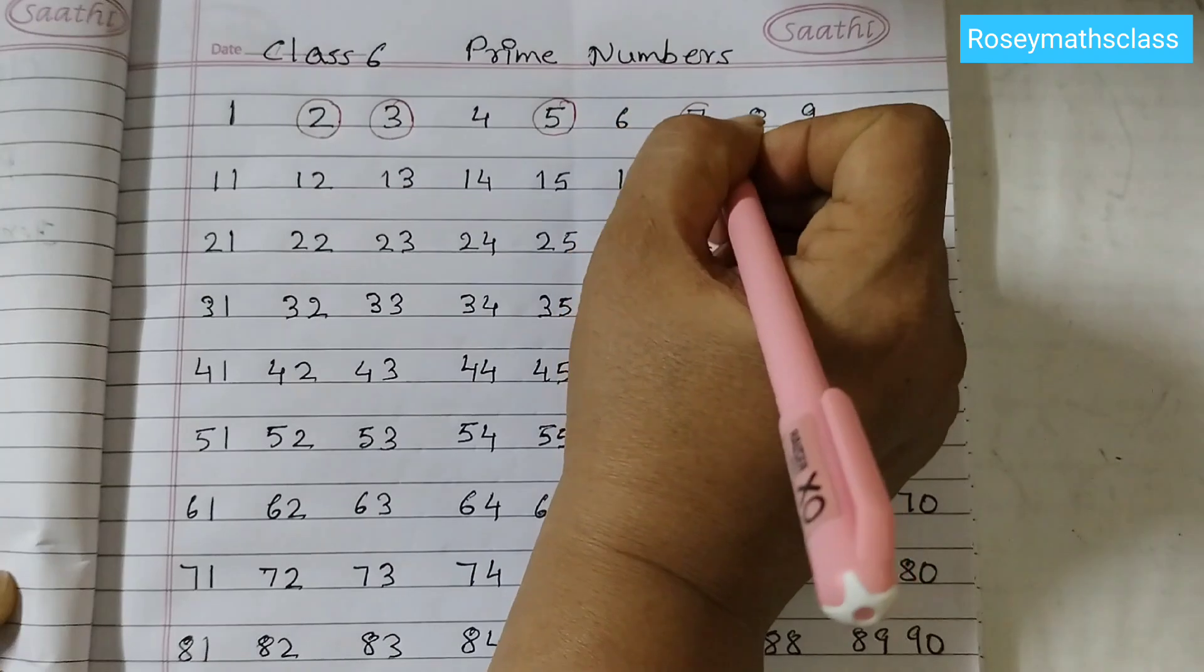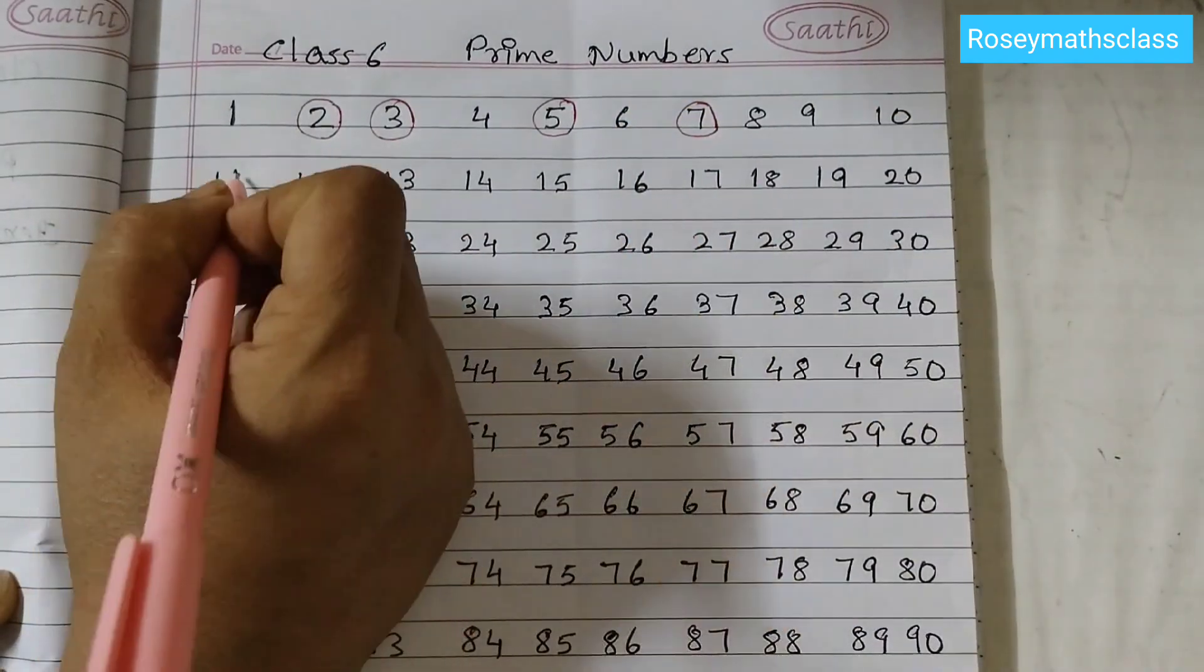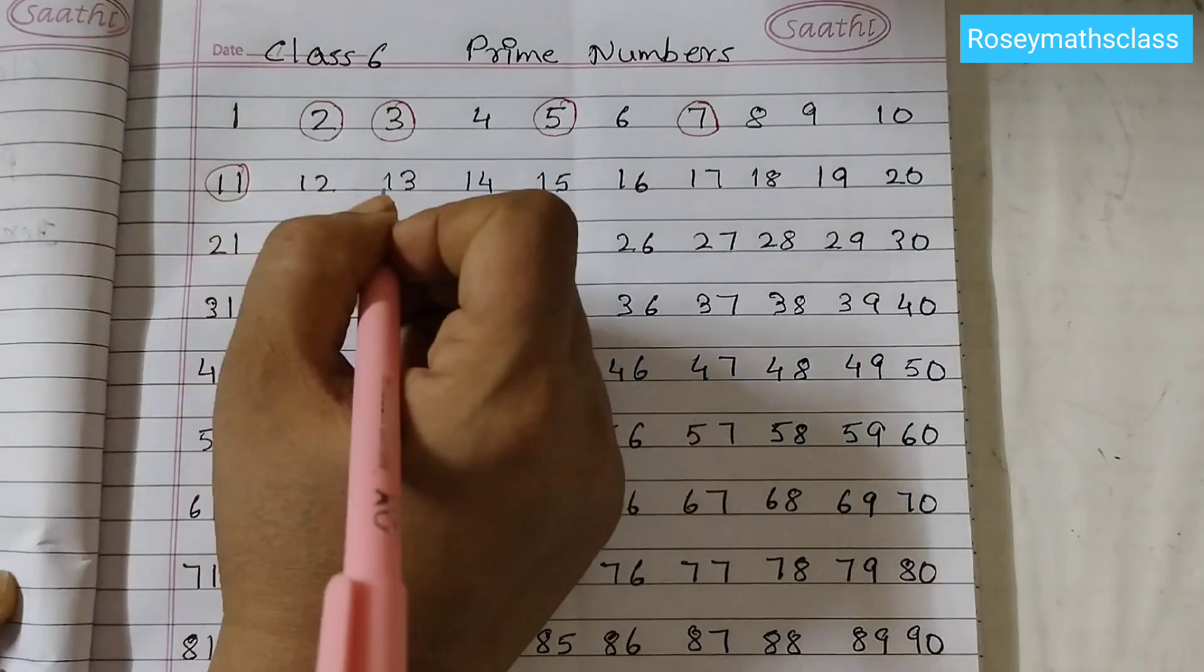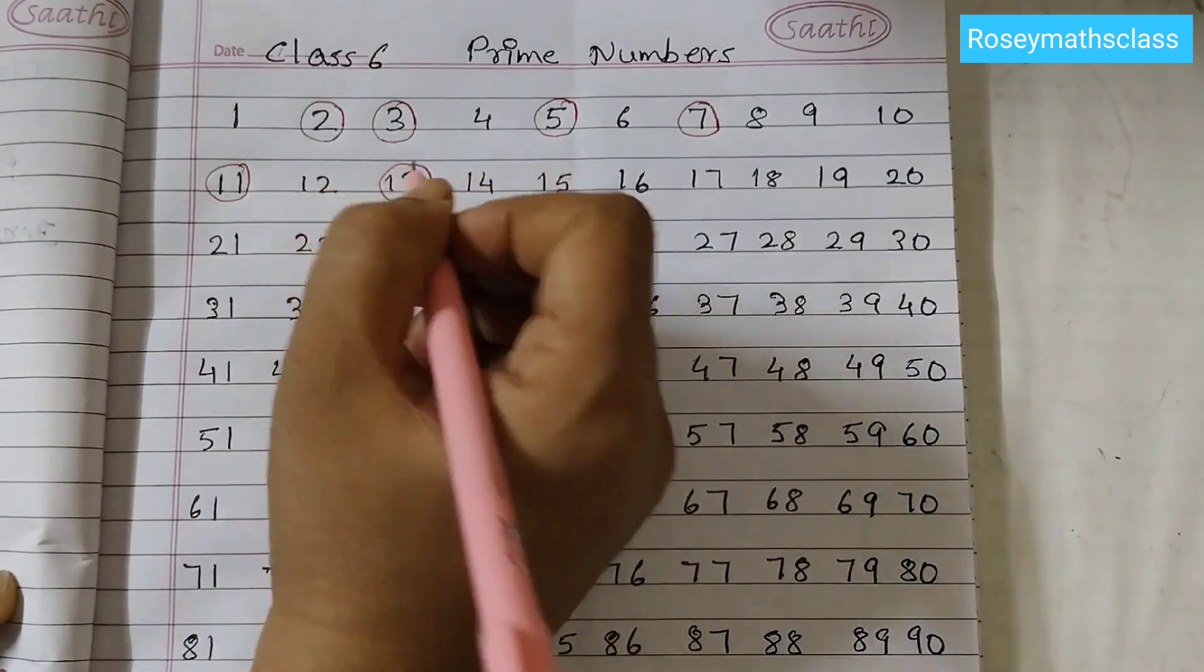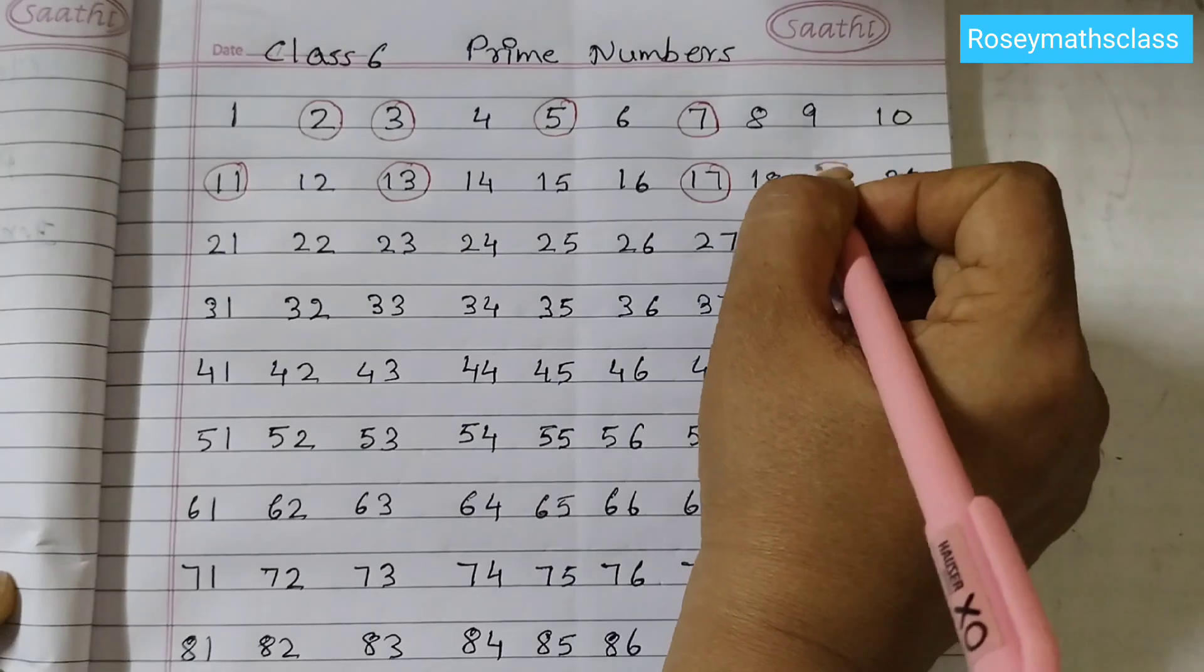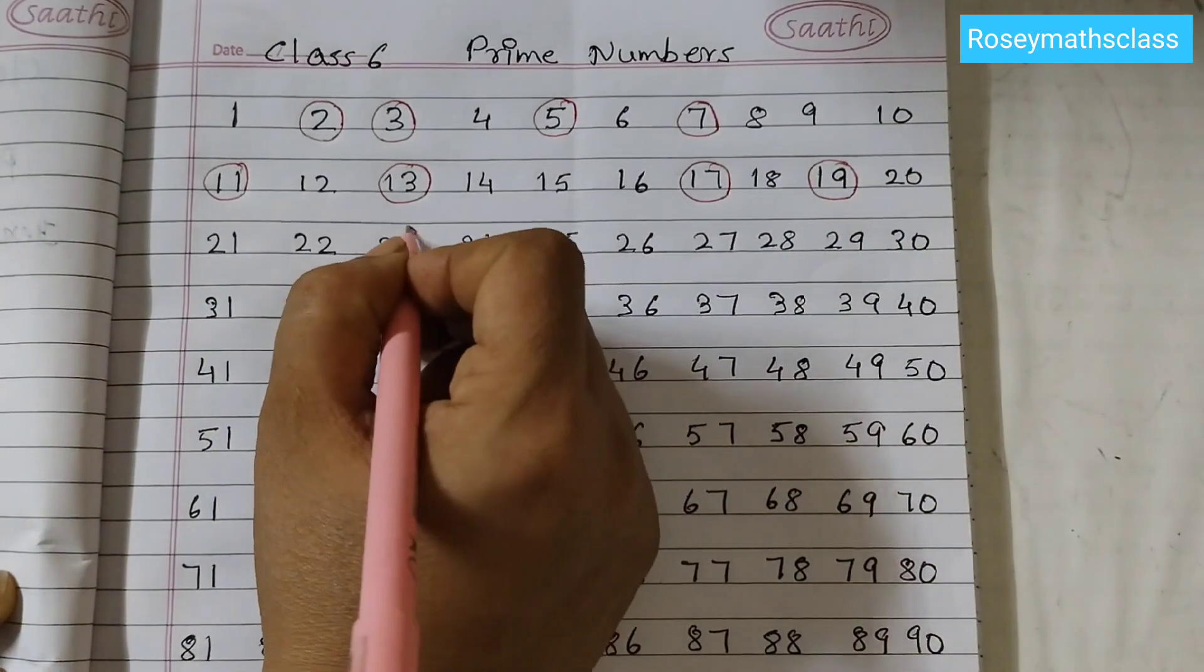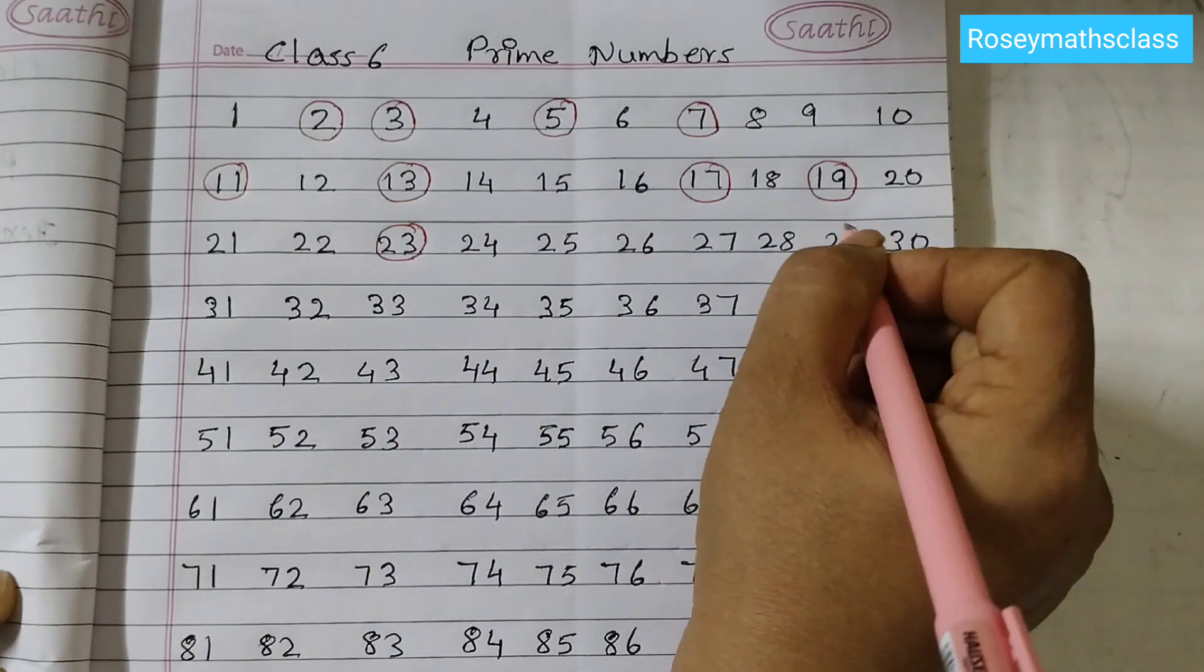In the first line, the first prime number is 2, then 3, 5, 7. So there are four prime numbers. Second line we have 11, 13, 17, 19. Third row: 23, 29.